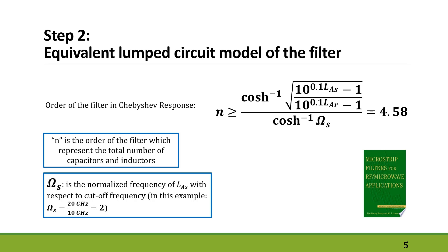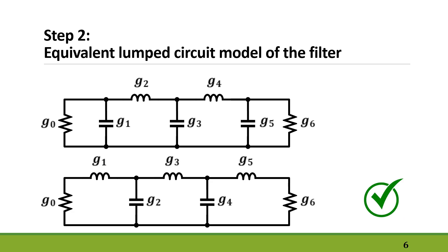Now we are ready to jump into the next step. Since we are designing a Chebyshev filter, we can use this equation to find the order of our filter. You can find this equation in the Hong and Lancaster book. If we put the information from step one into this equation, we come up with a value of 4.58, which we round up to 5. So the order of our filter is set to 5.